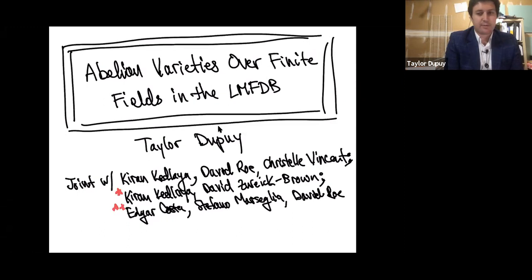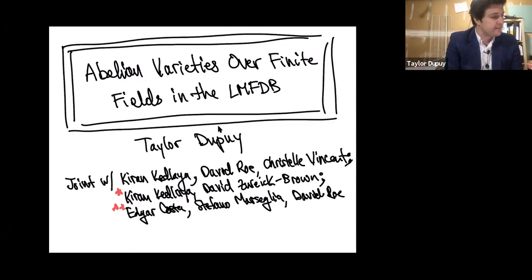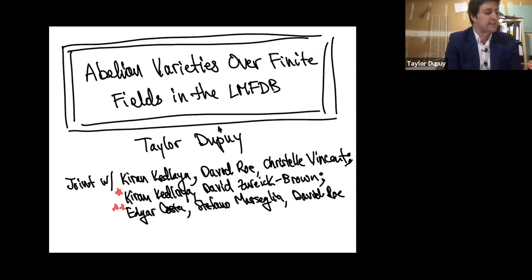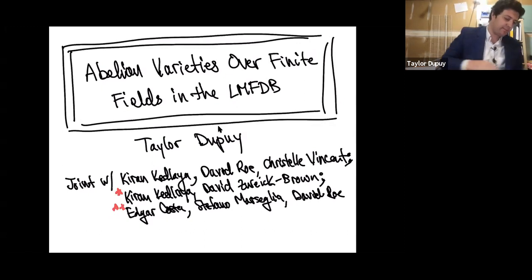This is joint work with a lot of people. The database itself was made with Karen Kedlaya, David Roe, and Christelle Vincent. There are two papers posted in the Discord: one is about a counterexample to a conjecture of Ahmadi and Shparlinski, and there is ongoing work with Karen Kedlaya and David Zureick-Brown about angle ranks. There is also another project for the database of isomorphism classes of ordinary abelian varieties.